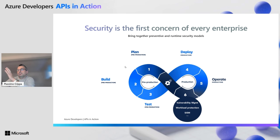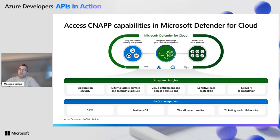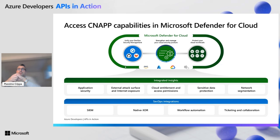That's where we want to focus today by looking at Defender for Cloud and one of its offerings, which is Defender for APIs. Defender for Cloud gives us the major tool to take care of DevOps, to take care of our security posture, and then to protect the workload. On top of Defender for Cloud, we have all the integrated insights that are surfaced by the tool.